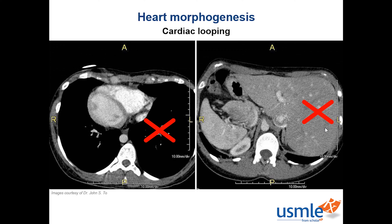That would be Kartagener syndrome, which is due to a defect in a microtubule protein called left-right dynein. Without properly functioning microtubules, cilia cannot function properly in cellular motility, as well as fluid transport and transduction pathways. This particular dynein is called left-right dynein because it's critical in positioning organs on the left or right side of the body. This is also termed situs inversus, which in Latin means inverted sides, and can be seen with left-right dynein defects.